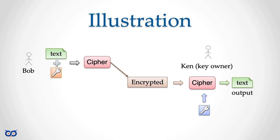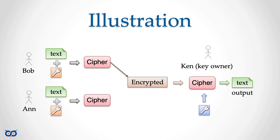Ken generated that key pair, kept the private key secure, and used it to decrypt information sent to him. He then gives his public key to his buddy Bob. Ken also has another friend named Ann — she too uses his public key to encrypt a message to him and sends it. Ken can decrypt it using only his private key.